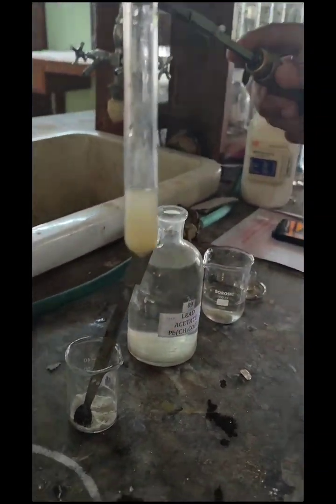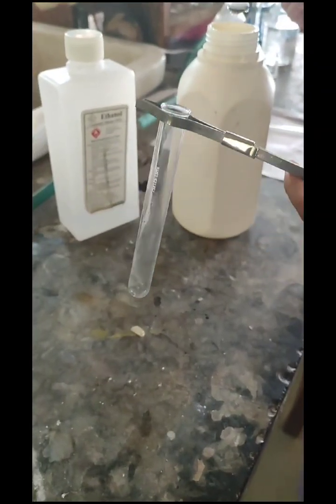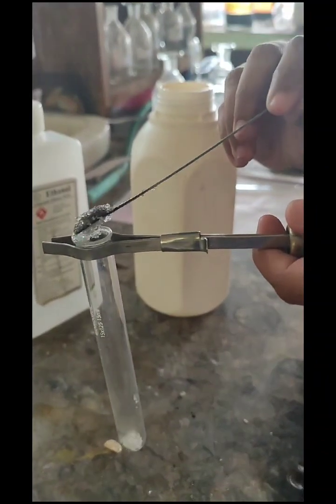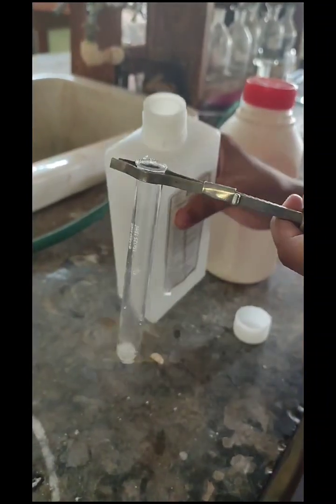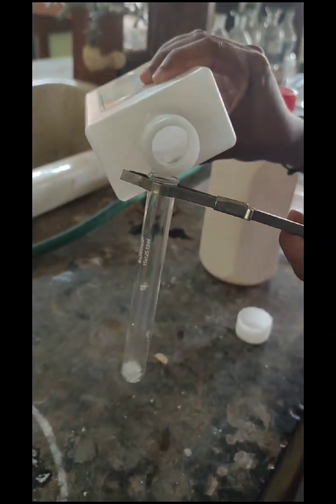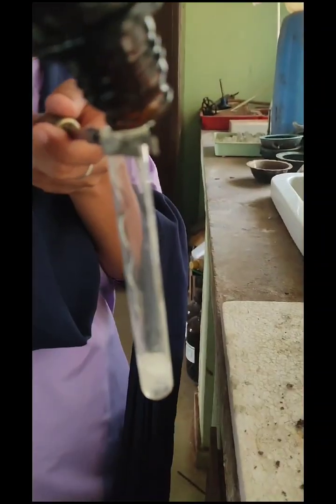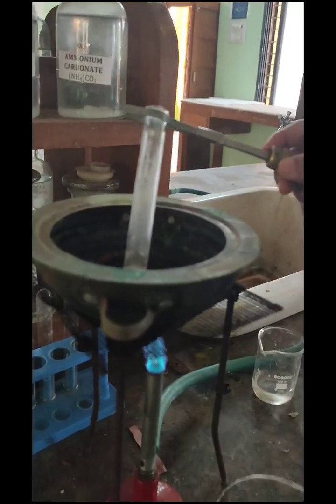Now we are performing the test for acetate. For this, add some mixture in a test tube. Then add some ethanol. Add some concentrated H2SO4 to this. Heat the solution for 10 minutes.